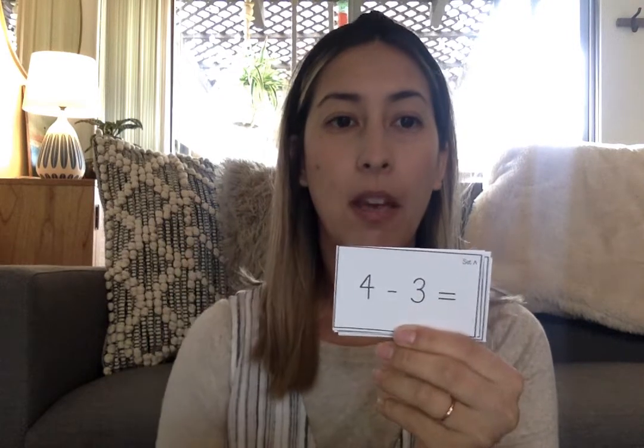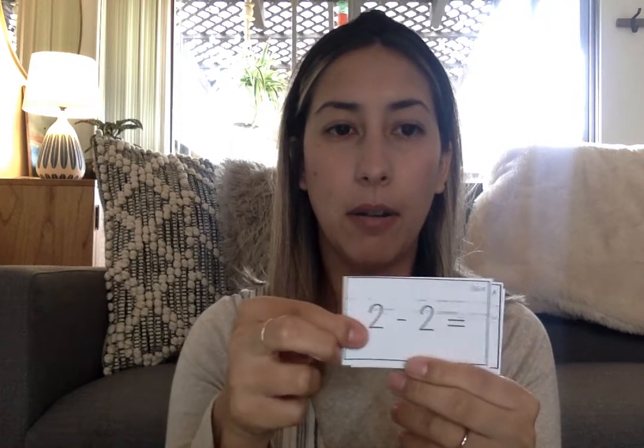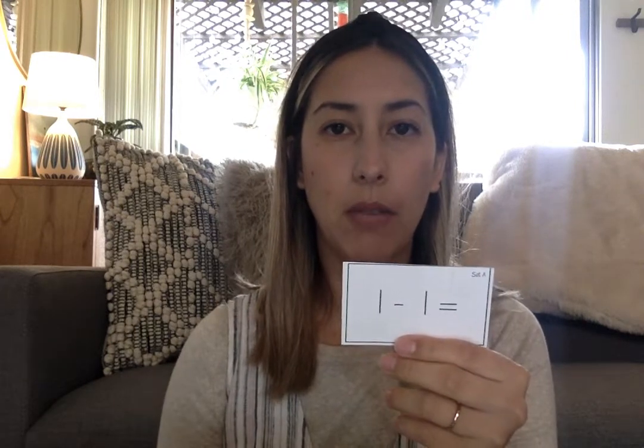Next I'm going to go over some fast facts. These are just subtraction facts and you should be practicing your fast facts at home. We've got: 3 minus 3 equals 0; 4 minus 3 equals 1; 5 minus 4 equals 1; 2 minus 2 equals 0; 5 minus 3 equals 2; 3 minus 2 equals 1; 1 minus 1 equals 0; and 4 minus 2 equals 2.